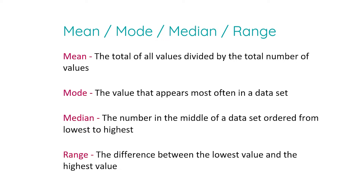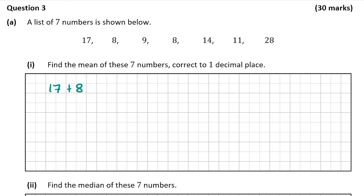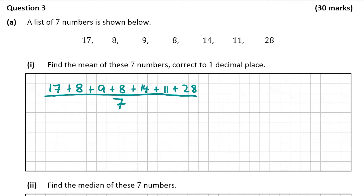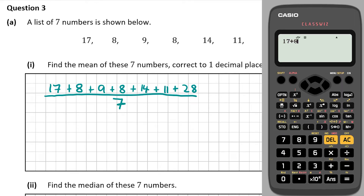So now let's go back and work out the mean of our 7 numbers. We're going to add all the numbers together and then divide by the amount of numbers that we have, which is 7. So we can add the numbers together on the calculator. Adding all the numbers together, I get 95.